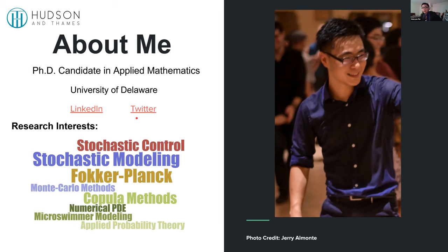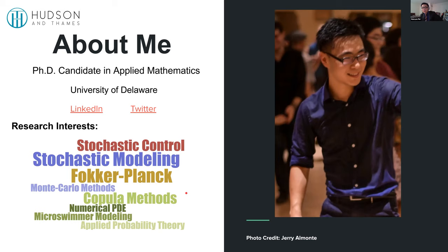A brief introduction about my research interests: my PhD is on stochastic modeling on aggregation of micro swimmers — a lot of Markov-Chain, Monte Carlo, Fokker-Planck equations, and PDE methods and numerical PDEs. I am also interested in stochastic methods in finance, so copula methods and stochastic control are things I'm currently working on or will be working on very soon.